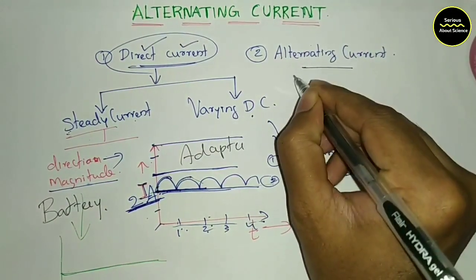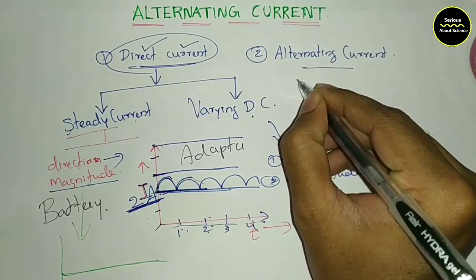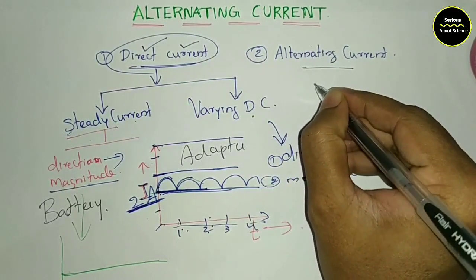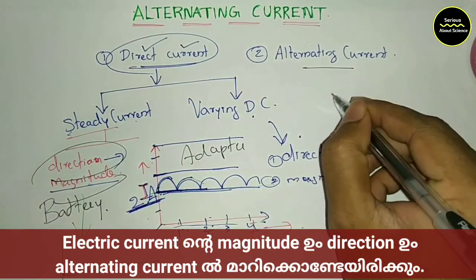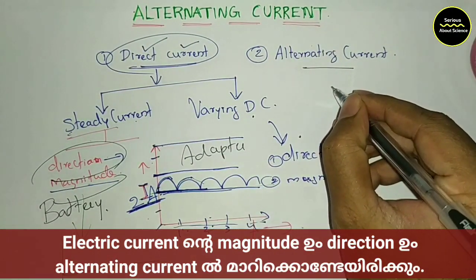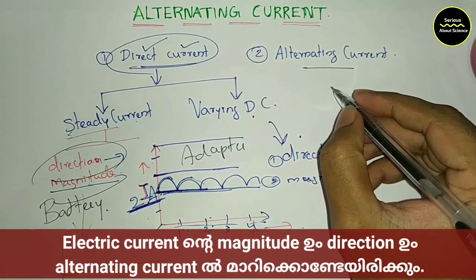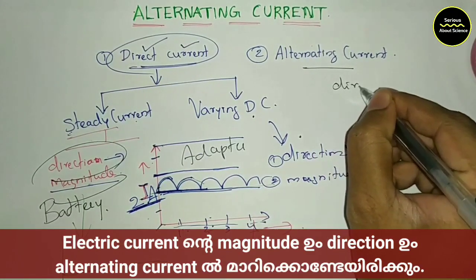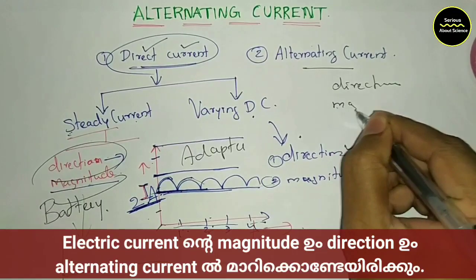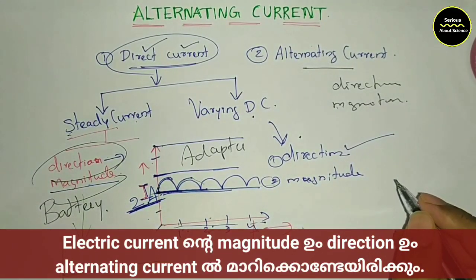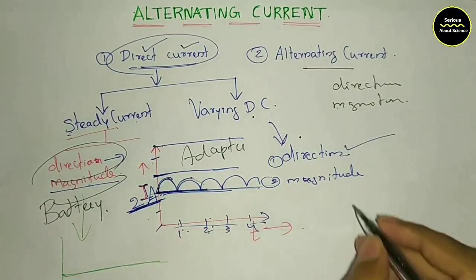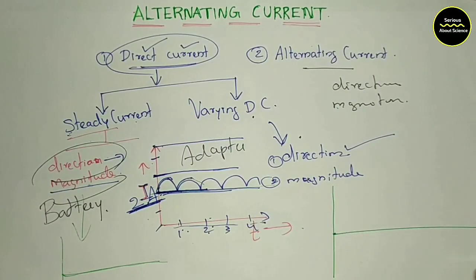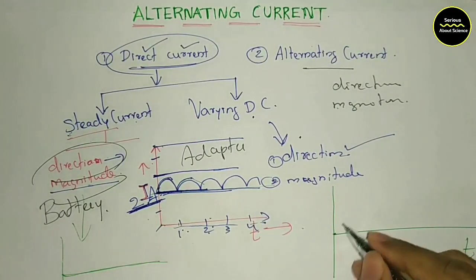Alternating current is that current whose direction and magnitude both change periodically with time continuously. The alternating current is AC. The alternating current has a wave form. The current is continuous.